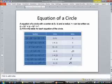Here the center is at negative 4, 3. Negative 4 is my value for h, and 3 is my value for k. The radius is 2.